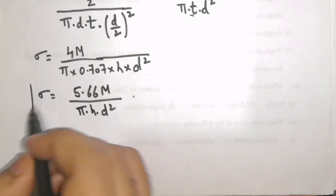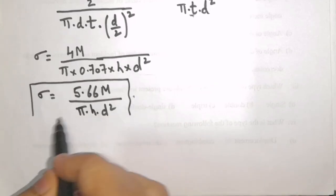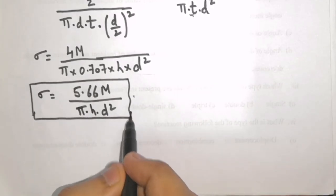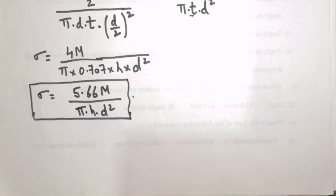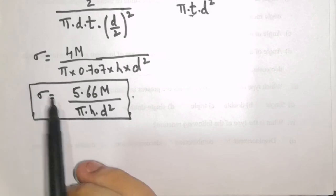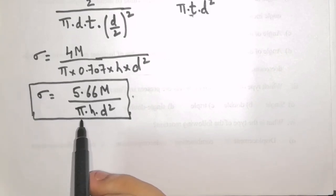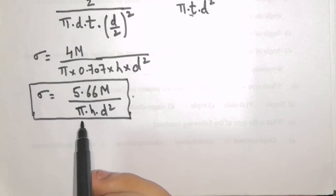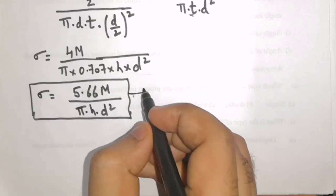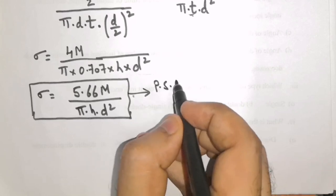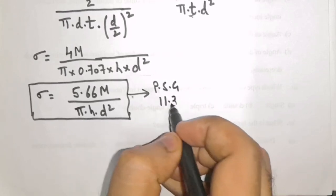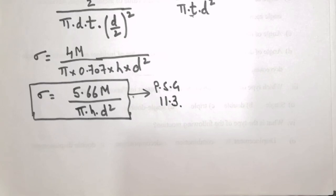This is the expression for the bending stress induced in the weld when it is subjected to purely bending moment. This relation is directly available in the design data book PSG page 11.3. While solving problems we can directly use this relation and quote PSG 11.3.